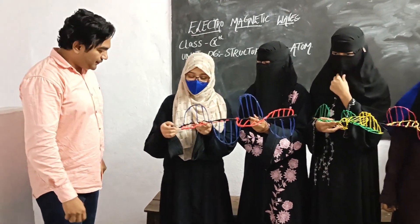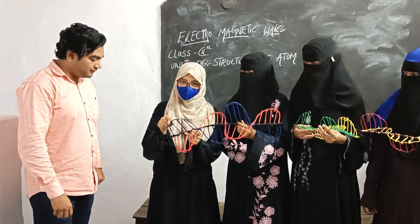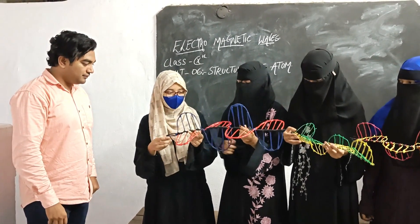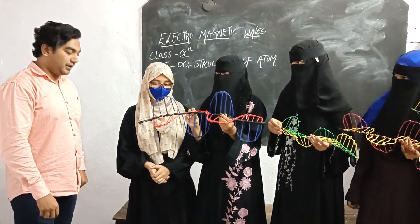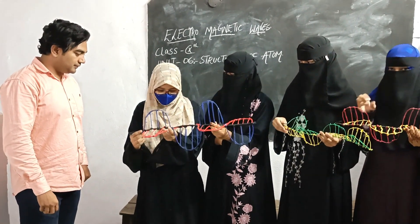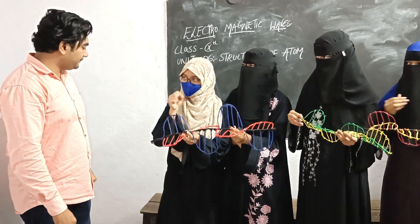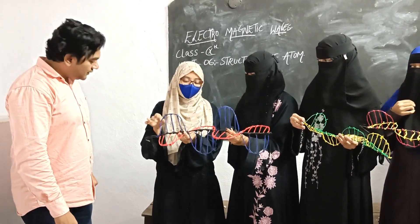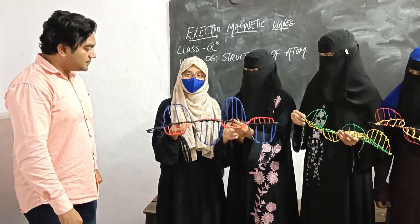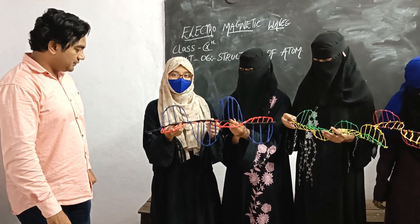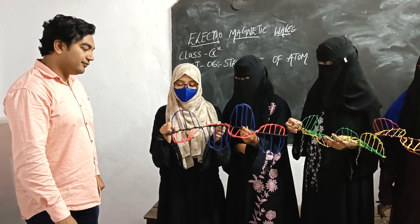The peak surface of electric waves is called the crest, and the bottom surface of magnetic waves is called the trough. The distance from crest to crest and trough to trough is known as the wavelength. The number of wavelengths in a particular time is known as frequency.